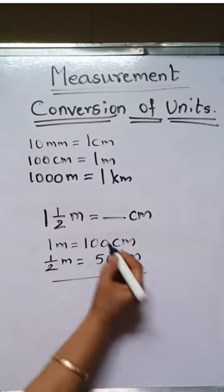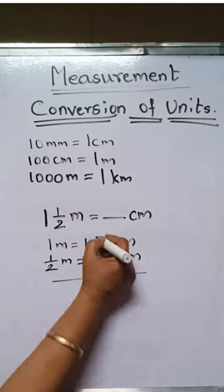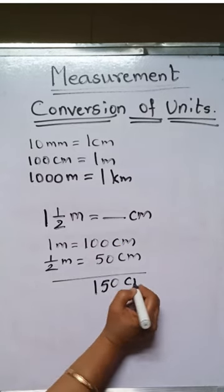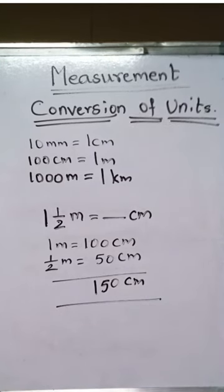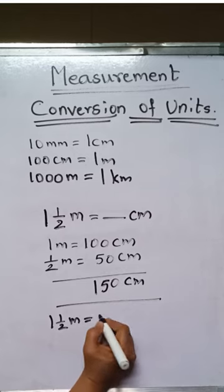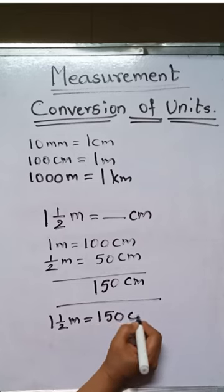Now these two we should add. 0 and 0 is 0, 0 and 5 is 5, and this 1 will come here. So 150 centimeters. So 1 and a half meters equal to 150 centimeters.